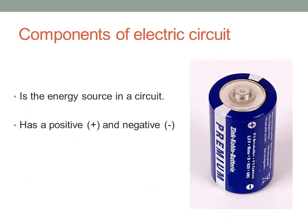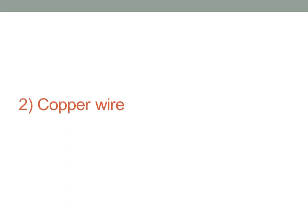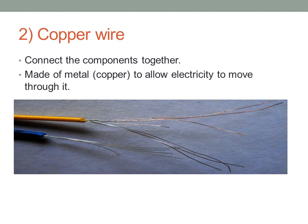The components of the electric circuit are simple things we can see every day at home. First, the battery — it is the energy source in the circuit. Look at any battery and you'll find two terminals: positive and negative, plus and minus. Second, the copper wire — it connects the components together and is made of copper, which is a metal that allows electricity to move through it. This is called copper wire.